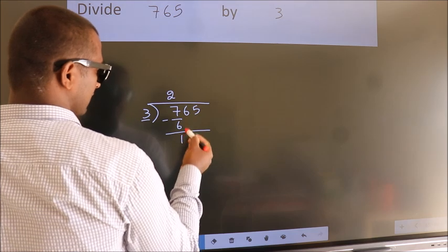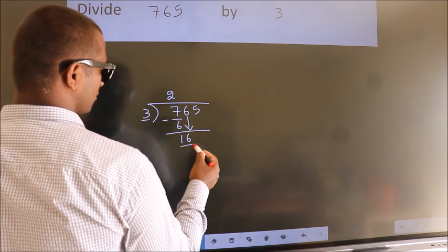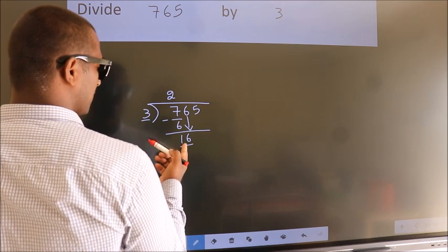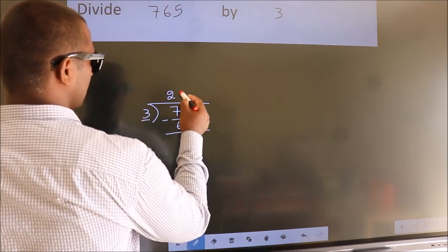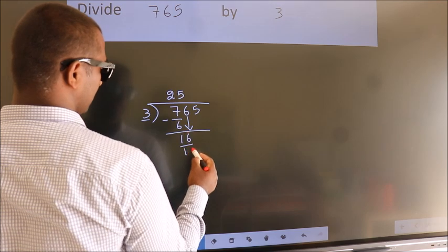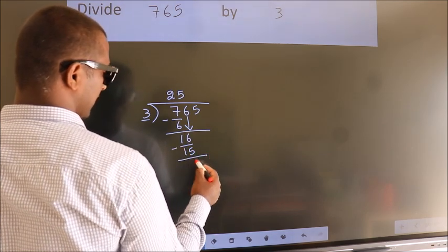After this, bring down the beside number. So 6 down, making 16. A number close to 16 in the 3 table is 3 fives, which is 15. Now we subtract. We get 1.